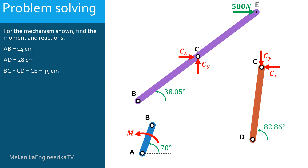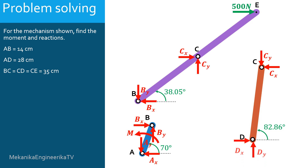Similarly, in B, we have a pin joint between bar BCE and bar AB. A pin joint blocks relative translations in horizontal and vertical directions. Thus we need two reactions BX and BY. The reactions BX and BY applied on bar BCE are arbitrarily considered negative; thus the reactions BX and BY applied on bar AB are considered positive, opposite to the ones applied on bar BCE. Also, in A, we have a pin joint between bar AB and the ground. Thus we need two reactions AX and AY, arbitrarily considered negative. Finally, in D, we have a pin joint between bar CD and the ground. Thus we need two reactions DX and DY, arbitrarily considered positive.